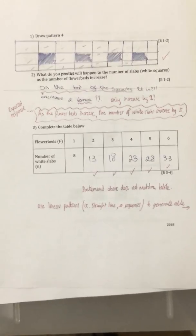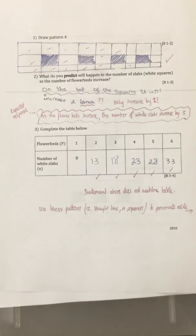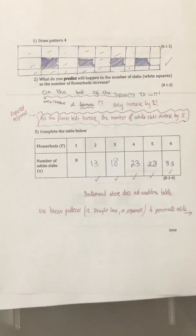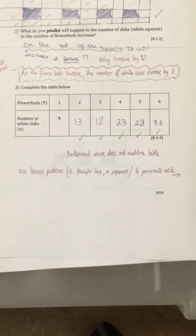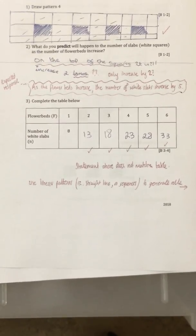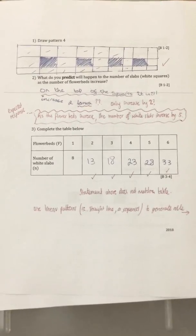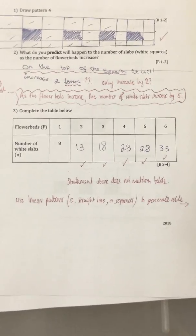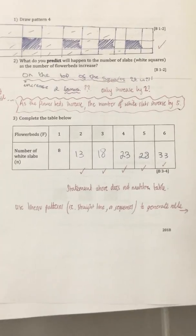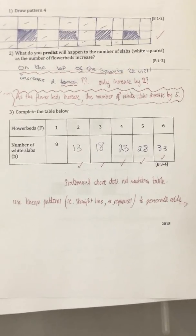If you're a parent watching this, you might want to get your son or daughter to practice these simple patterns — drawing them and writing a sentence about what they think will happen next. Part 3 is taking your picture diagram and putting it into a table. In this case, the table is half done and you fill in the rest. This student, although they couldn't explain the pattern correctly, was able to fill out the table correctly, showing it goes up in fives. Their statement above does not match the table.